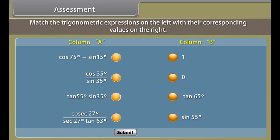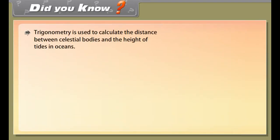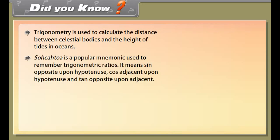Did you know? Trigonometry is used to calculate the distance between celestial bodies and the height of tides in oceans. SOH-CAH-TOA is a popular mnemonic used to remember trigonometric ratios: sine equals opposite upon hypotenuse, cosine equals adjacent upon hypotenuse, and tangent equals opposite upon adjacent. The word cosine sounds similar to its Sanskrit counterpart kotijya, used by Aryabhata. The word sine derives from the Latin translation sinus of jiva or jya, used by Aryabhata to denote half-cord.